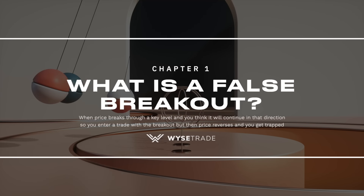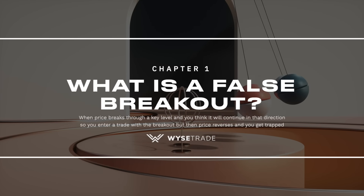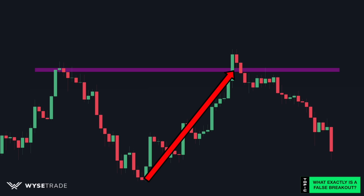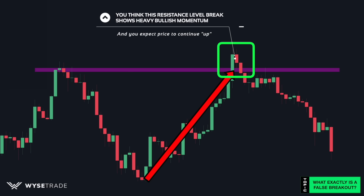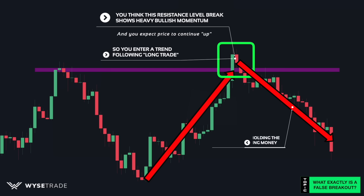So what is a false breakout? In an uptrend, you notice price break through a key level of resistance. So you think to yourself, this shows heavy bullish momentum and you expect price to continue up, so you enter a trend following long trade. Then what happens? Price might move a little more, but then it reverses drastically. You end up holding the bag, losing money, and you got trapped by the false breakout.